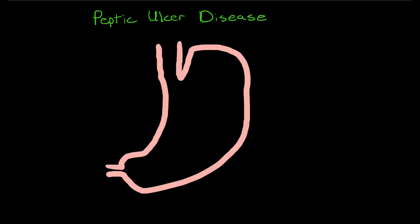Hey, Andrew Wolff here. In this video I'm going to talk about peptic ulcer disease, but before I get into talking about the pathophysiology, I want to talk about the physiology of the stomach — in particular the physiology of acid production, the regulation of acid production, and the physiology of the protective mucosal surface of the stomach.